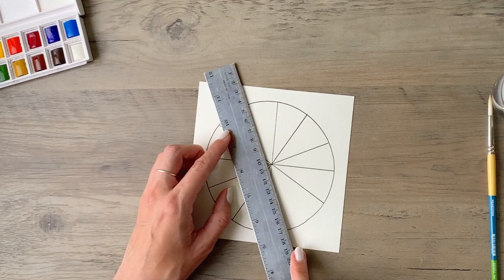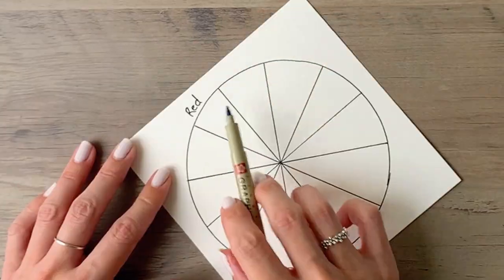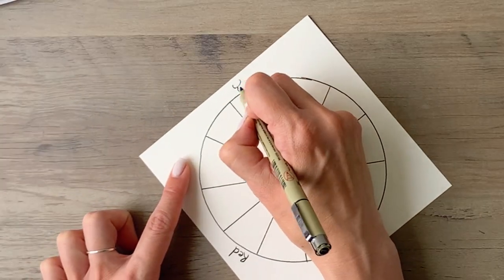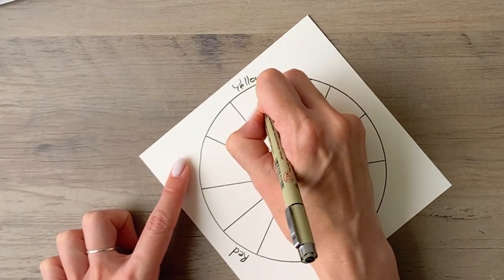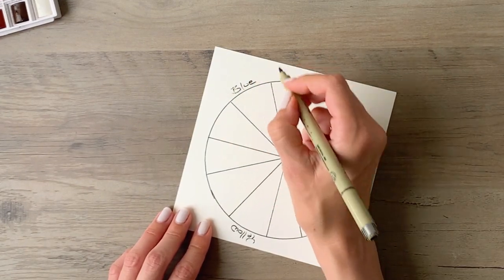Now that the wheel is ready, we'll start with our primary colors. These are the colors that can't be mixed from anything else. So we'll start with red, count three wedges over, and then on the fourth wedge put yellow, count another three segments over, and in the fourth one put blue.